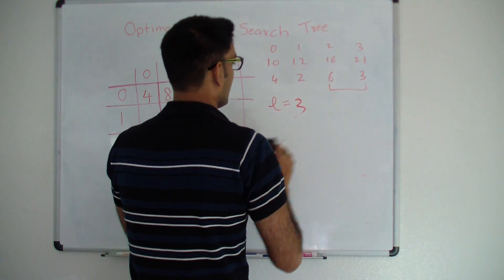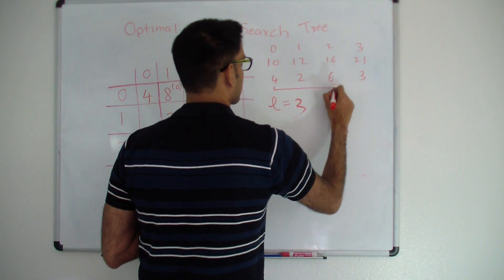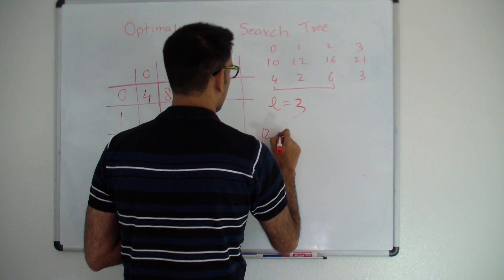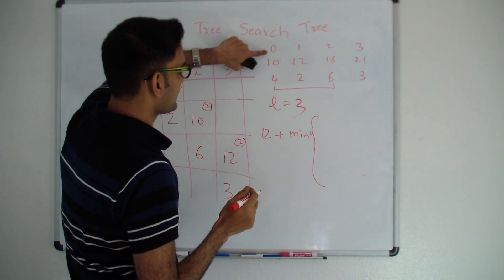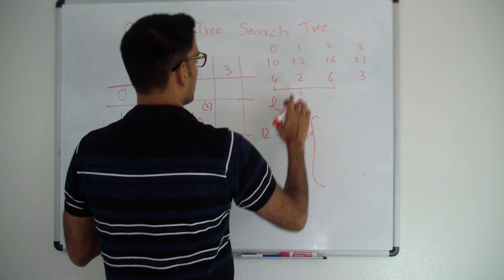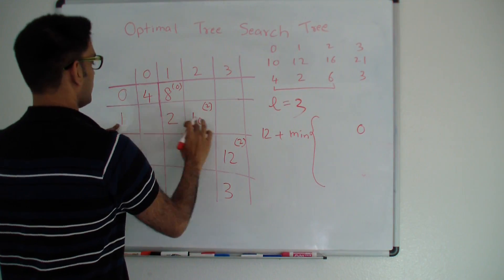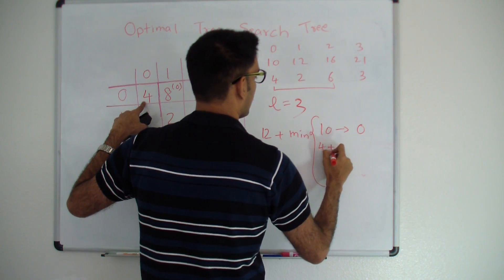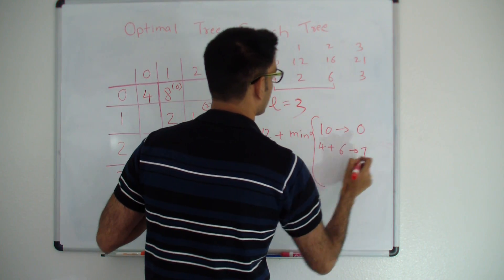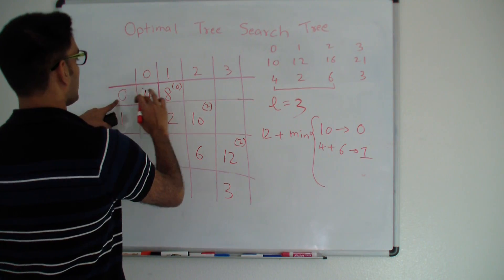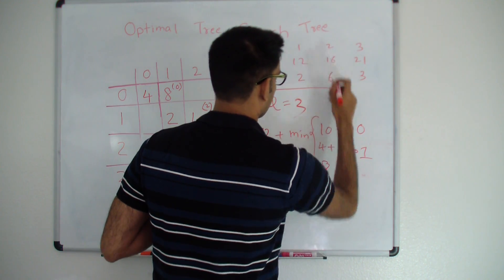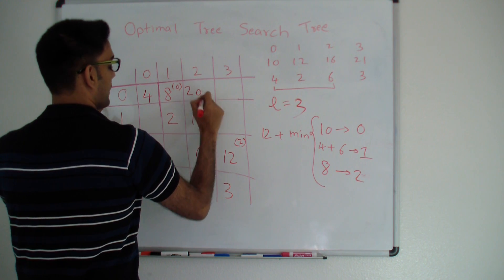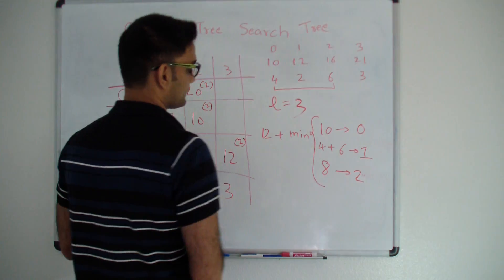Now L equals 3, looking at 3 keys at a time. For cell (0,2), first get the sum: 4 plus 2 plus 6 equals 12. Then 12 plus minimum of: if key 0 is root, cost is (1,2) which is 10; if key 1 is root, cost is (0,0) plus (2,2) which is 4 plus 6 equals 6; if key 2 is root, cost is (0,1) which is 8. Minimum is 6... actually picking minimum 8 from key 2 gives us... we pick minimum 6 from key 1. Wait — minimum of 10, 6, 8 is 6, so 12 plus 6 equals 18... The cell (0,2) is 20, with key 2 as root, picking (0,1) equal to 8 as minimum.